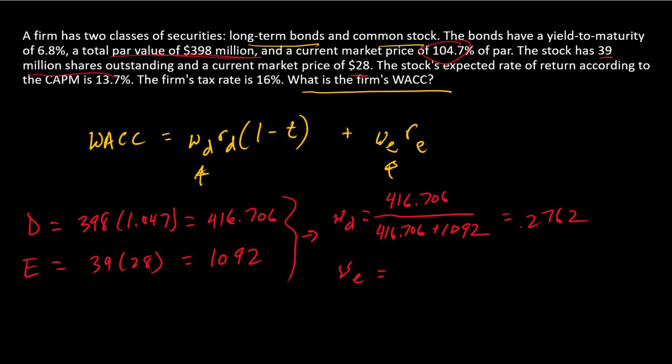WE is market value of the equity divided by total market value of the firm. That's 0.7238. So there's WD and WE.